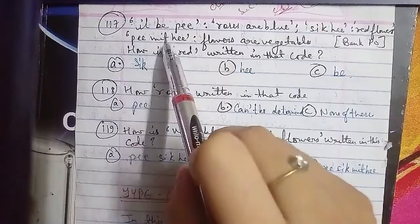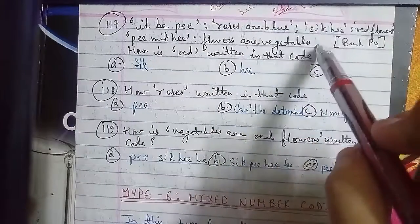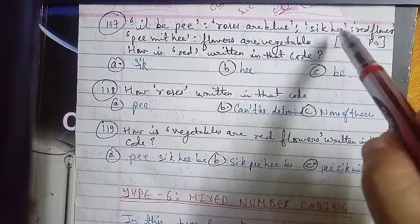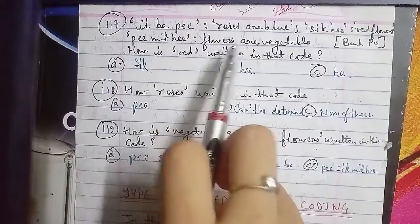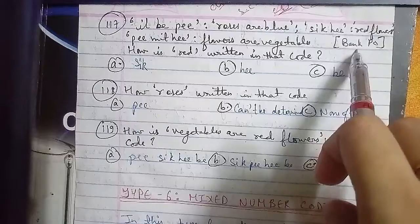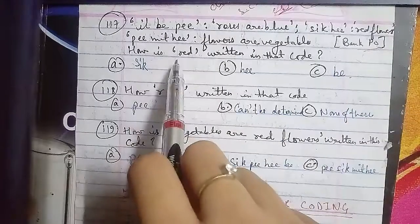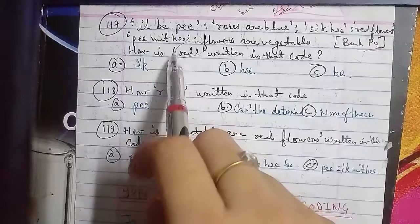il ho p is coded as roses are blue, sick hik is coded as red flowers, and p mit he is coded as flowers are vegetables. This is asked in your bank exam question paper. How is red written in that code? Option A is sick, B is he, and C is b.